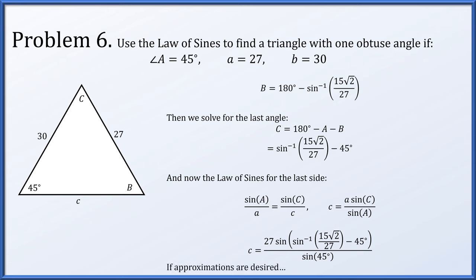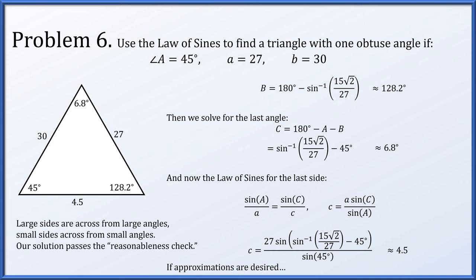If you want approximations: angle B is about 128.2 degrees, angle C is about 6.8 degrees — quite small — and side length c is about 4.5. Putting those in the triangle, we check: is the longest side across from the largest angle? Yes — 30 is across from 128.2. Is the smallest side across from the smallest angle? Yes — 4.5 is across from 6.8. Everything checks out; this is pretty reasonable.